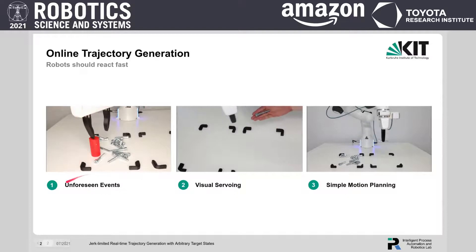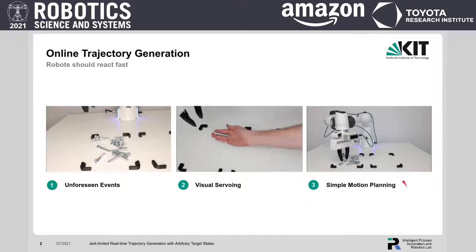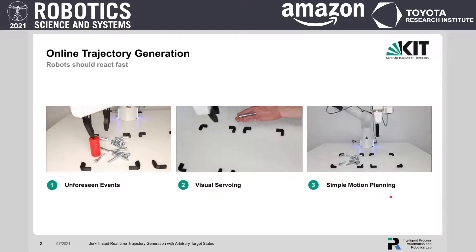Here, the robot needs to react to unforeseen events like collisions, or we want the robot to do visual servoing. Last but not least, we want to do simple motion planning along Cartesian paths, but time-optimal and as fast as possible.